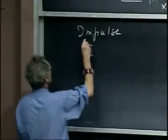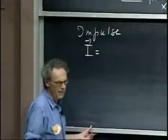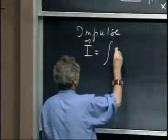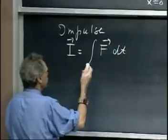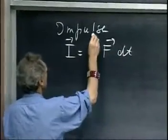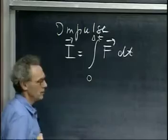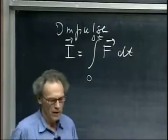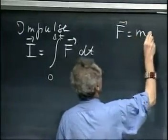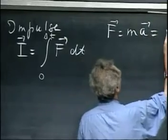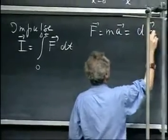Impulse is a vector, and it is defined as the integral of f dt during a certain amount of time, let's say from zero to delta t. Now, f equals ma, which is also dp dt. We have seen this now several times, the rate of change of momentum.